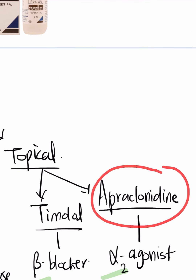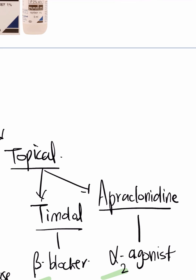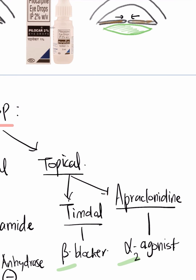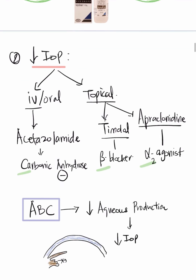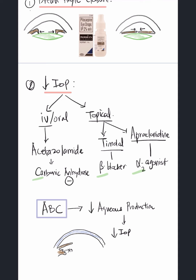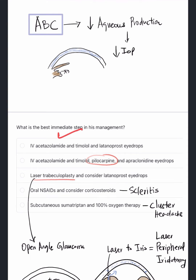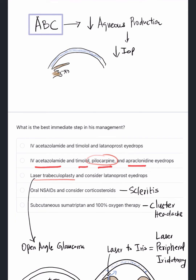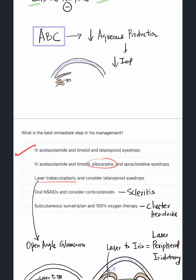Apraclonidine provides very good IOP reduction and is preferred over a prostaglandin such as latanoprost. The correct answer is option B: IV acetazolamide, timolol, pilocarpine and apraclonidine. Option A is wrong because it lacks pilocarpine and uses latanoprost instead of apraclonidine, which is not first line. Apraclonidine is preferred for its superior IOP-reducing action.